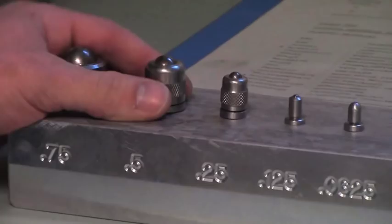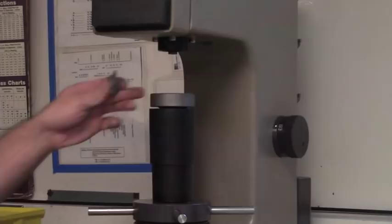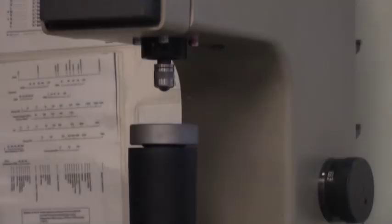Locate the correct indenter for the scale selected. We are using the R scale, which uses the half inch indenter. Simply place the indenter inside the machine and it will stay in place.